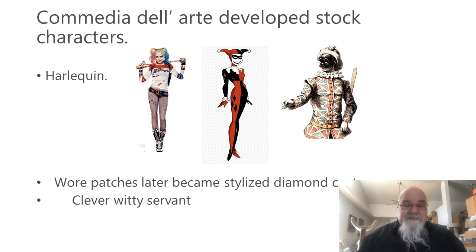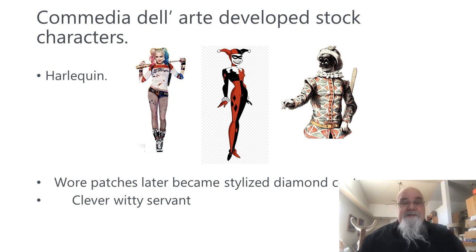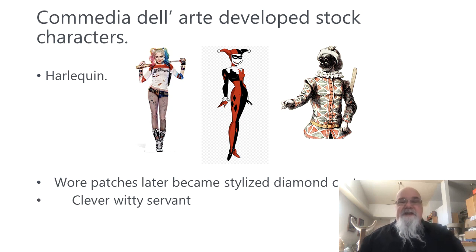Probably the one name you would recognize the most now is Harlequin. The first picture is probably what popped in your mind when I said Harlequin. She derived from the comic book Harlequin, who is well known because of her hat and her very stylized costume. She comes from the comic book Harlequin, who wore patches, and it very became a stylized diamond pattern. So if you were in the audience and saw the diamond costume, you'd go, oh, that's the character Harlequin. Harlequin was always a servant who was very clever and witty, kind of manipulating things, and the servant who knew everything that was going on.